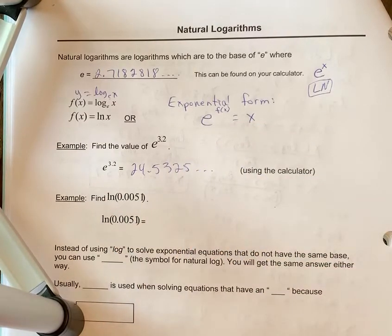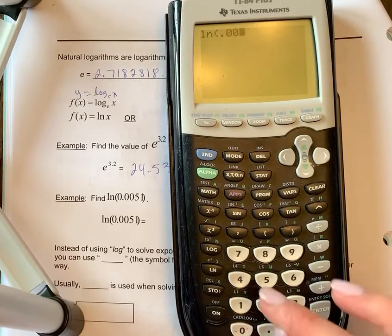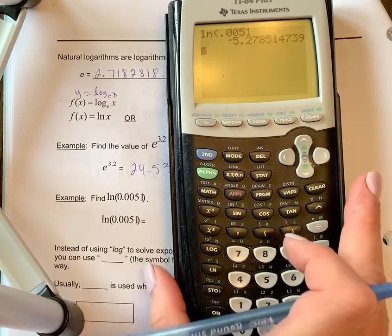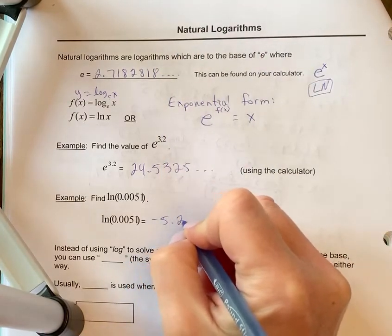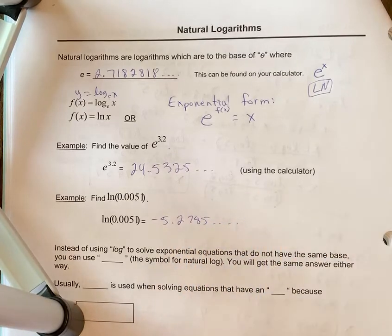And then to find the natural log of something, just like you would use your log button, you use a natural log button. So I just chose a number for us to try. And so we get negative 5.2785, etc. So just practice on your calculator, make sure you know where those buttons are, and that you can find that.